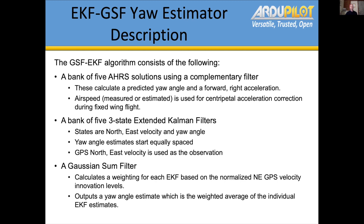The GSF stands for Gaussian Sum Filter, EKF for Extended Kalman Filter. We have five separate AHRS solutions using complementary filters — they calculate a predicted yaw angle and a forward/right acceleration from IMU data. We can also use airspeed, either measured or an average estimate for centripetal acceleration correction during fixed-wing flight. These AHRS solutions do not use GPS data — they are independent — and interestingly they also provide an independent attitude estimate backup for planes. We then have a bank of five three-state extended Kalman filters with states: north velocity, east velocity, and yaw angle. We start out with the yaw angle estimates spaced 72 degrees apart — that's 360 divided by five.